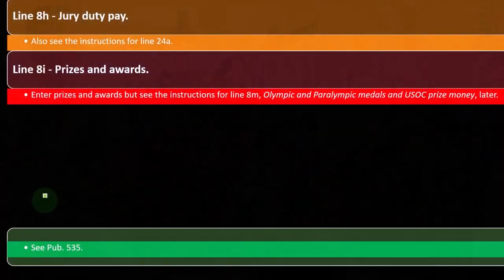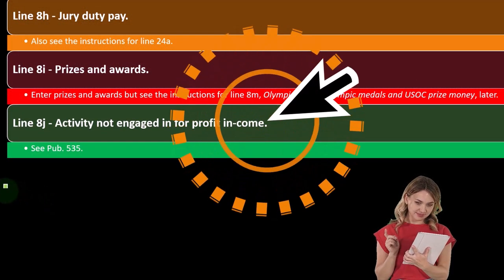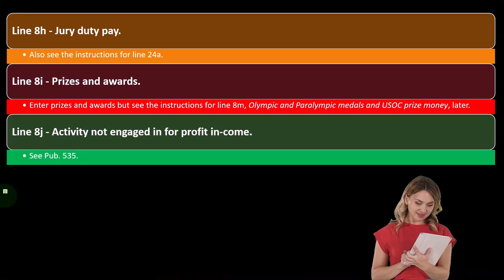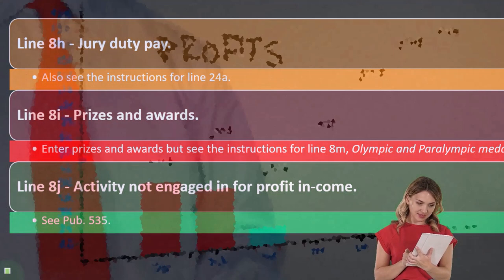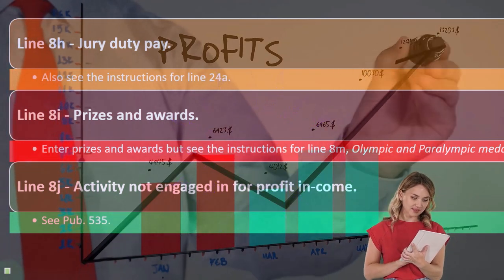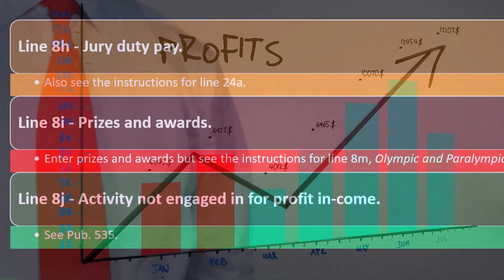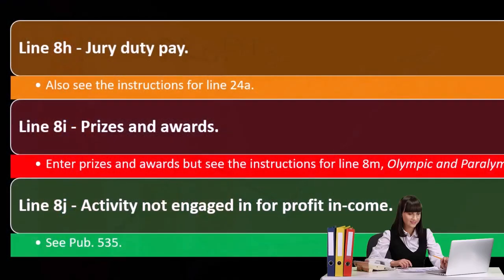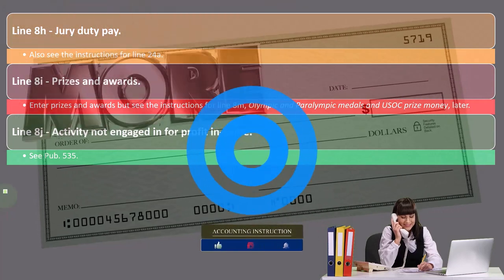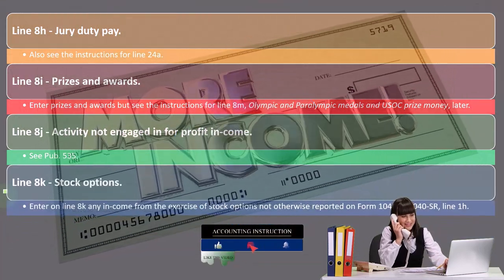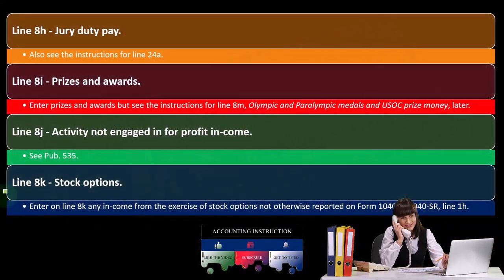Line 8j — income from activity not entered into for profit. If it is a for-profit activity, you'd need to put it on Schedule C or similar, because business income is subject to Social Security and Medicare taxes — and that's a big difference. Whereas if it's not a for-profit activity, you can put the income in the other income section, where it generally won't be subject to Social Security and Medicare calculations.